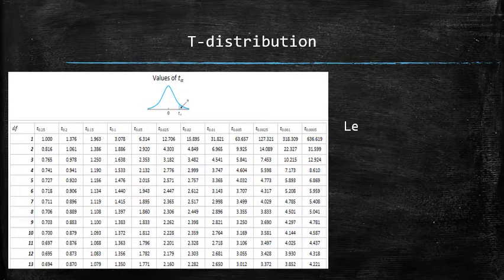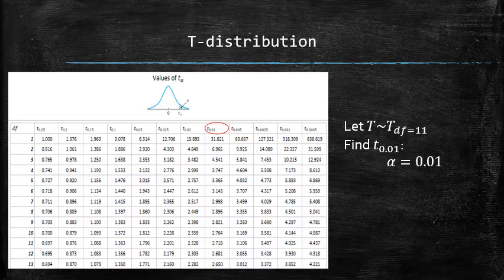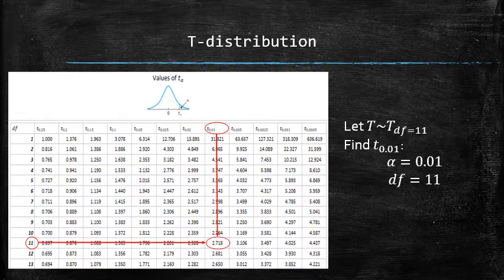Let's do another example. Let t be a random variable that has t-distribution with 11 degrees of freedom, and let's find t sub 0.01. We only need to identify alpha, which is 0.01, and the degrees of freedom, which is 11. And then look for the value in the intersection, which is our desired t sub 0.01.